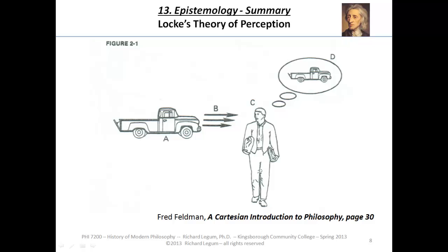Locke says there are things out there in the world, something that most of us probably think. For example, there is item A, which is Feldman's truck — and Feldman is number C over there. According to Locke, something comes off of Feldman's truck, these B things, and sort of interacts with Feldman.